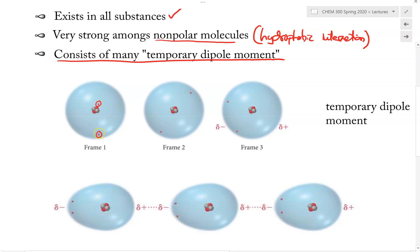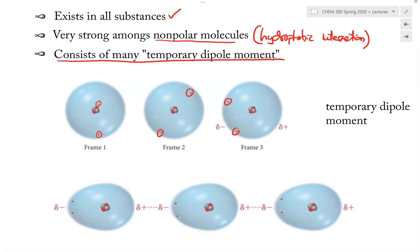Let's say at frame one, this is where the two electrons would be. If we take a picture at frame two, the electrons end up on opposite sides of the atom. At frame three, we find that the two electrons are now closer together and located on the left side of the atom. At frame three, something very special is happening — this atom now has what we call the temporary dipole moment.